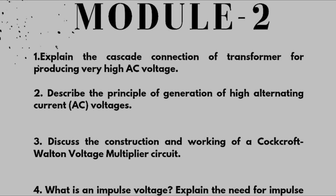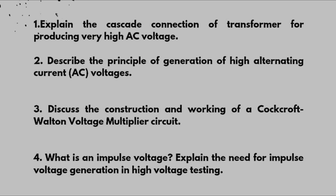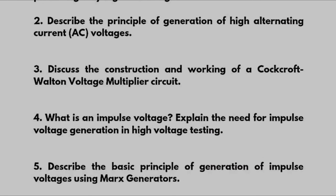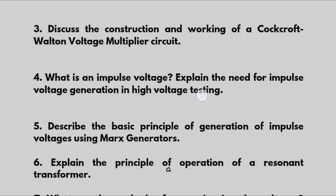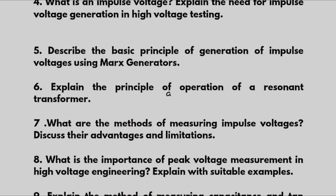Explain the cascade connection of transformers for producing very high AC voltages. Describe the principle of generation of high alternating current voltages. Discuss the construction and working of a Cockroft-Walton voltage multiplier circuit. What is an impulse voltage? Explain the need for impulse voltage generation in high voltage testing, and describe the basic principle of generation of impulse voltages using Marx generators.